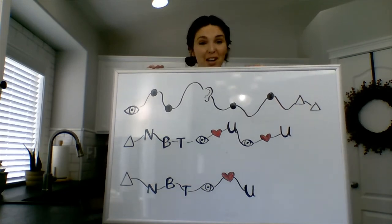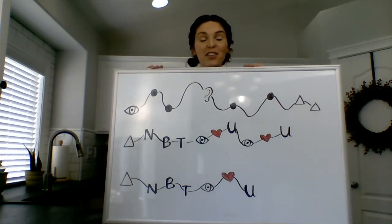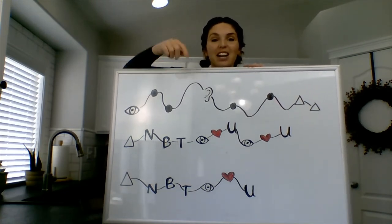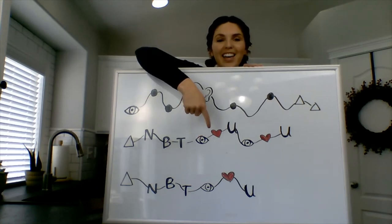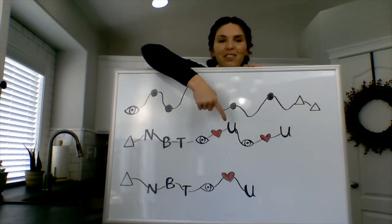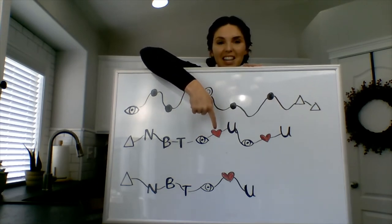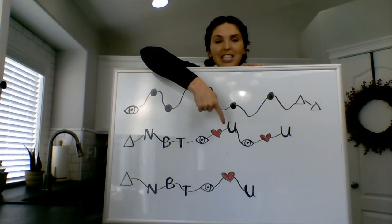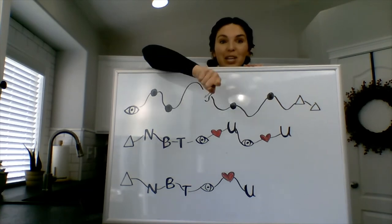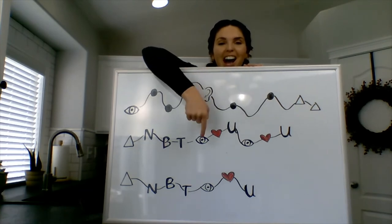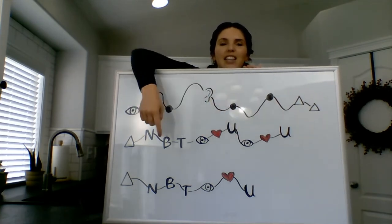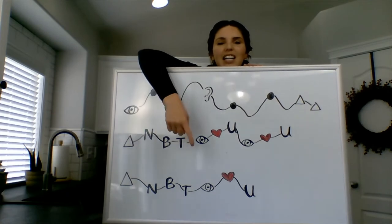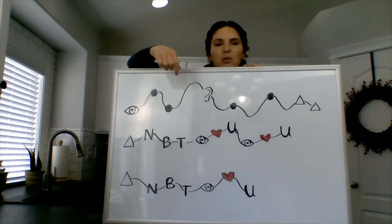Alright, I hope you figured out the very ending — there we say it three times: I love you. So when we see the red heart, it's 'love.' When we see the U, it's 'you.' I love you. I love you. And then at the very end again, I love you.